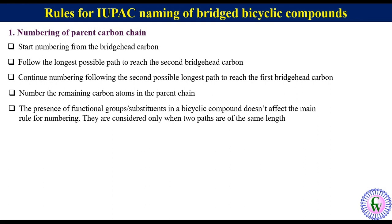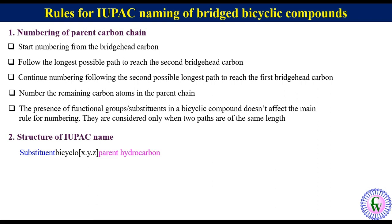The second point is regarding the structure of the IUPAC name. It consists of three parts: substituents, bicyclo inside a square bracket X.Y.Z, and the name of the parent hydrocarbon, where X, Y, and Z are bridge lengths. One thing to note is that X is always greater than or equal to Y, which in turn is greater than or equal to Z.